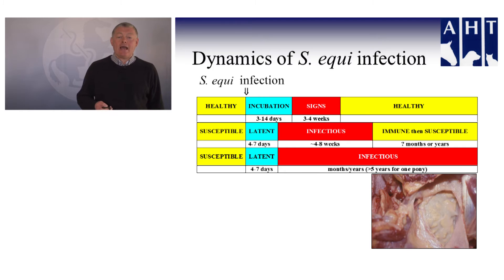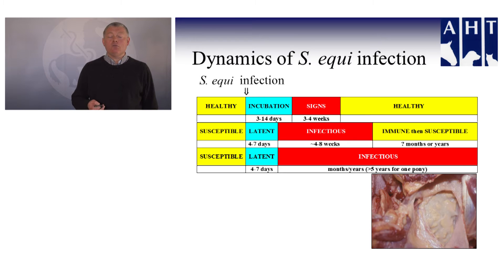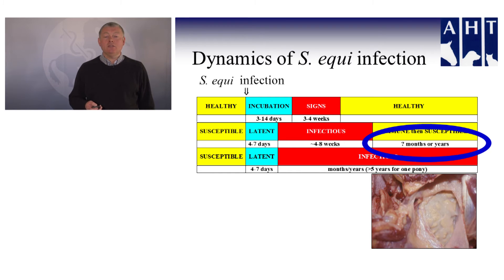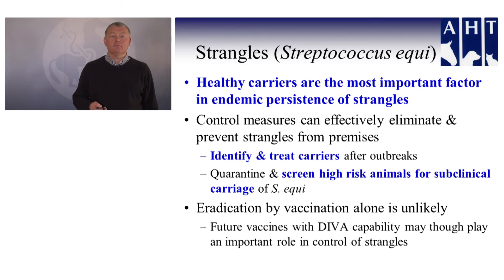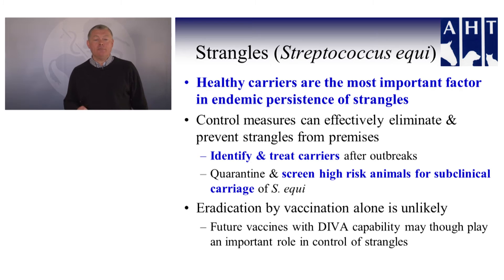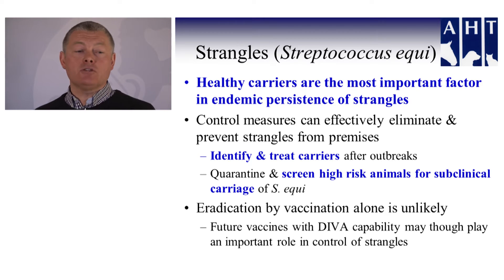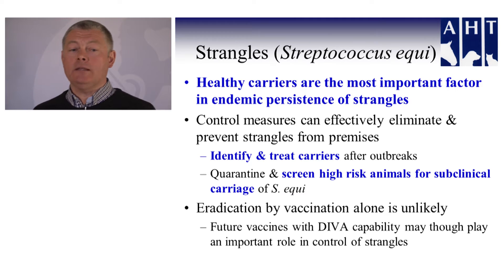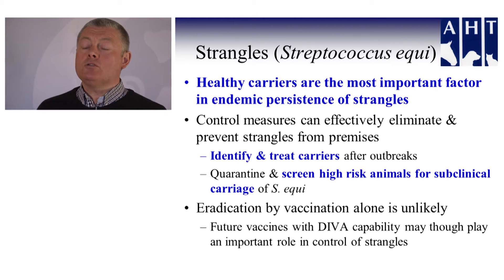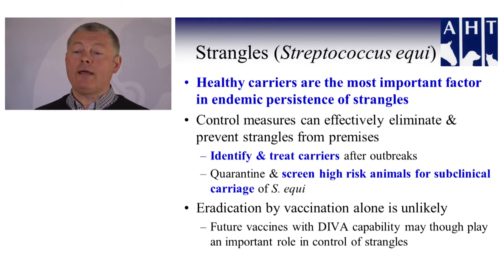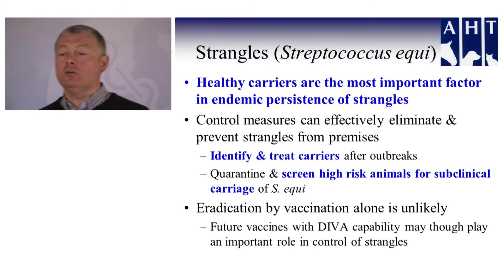The secret of strangles' success lies in around 10% of affected animals becoming long-term carriers. They will continue to harbour the organism for months or even years, and can act as a source of infection even after returning to normal health. Healthy carriers are the most important factor in the way that strangles persists within the horse population. But control measures can effectively eliminate and prevent strangles from entering premises. By identifying and treating carriers after outbreaks, this breaks the cycle of ongoing infection. Use of quarantine and screening of high-risk animals for subclinical carriage can be effective in preventing introduction of the disease.